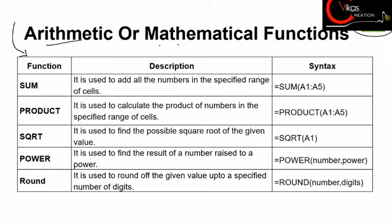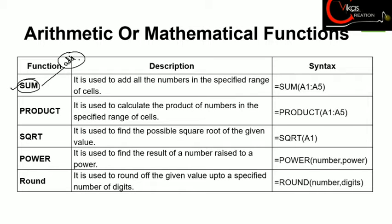Our first category is arithmetic and mathematical functions. In this category we only consider those functions which are performing any kind of mathematical operation. Our first function is the SUM function, and as the name makes clear, this function is generally used to add the values. It is used to add all the numbers in the specified range of cells.